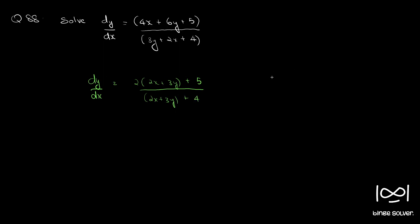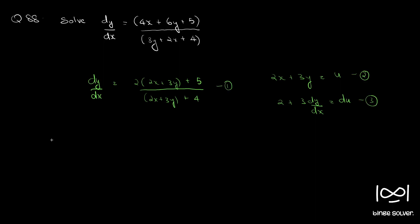So, we let u = 2x + 3y — call this equation 2. Differentiating: 2 + 3·(dy/dx) = du/dx, so dy/dx = (1/3)(du/dx − 2) — call this equation 3. The original differential equation is equation 1. Using equations 2 and 3 in equation 1: